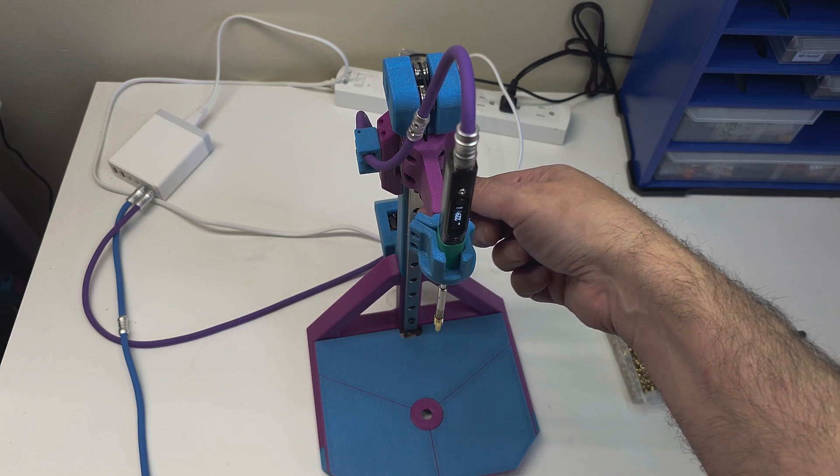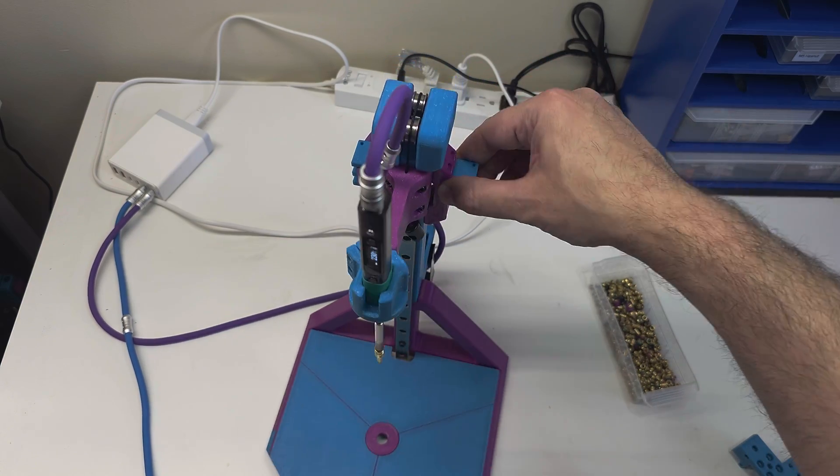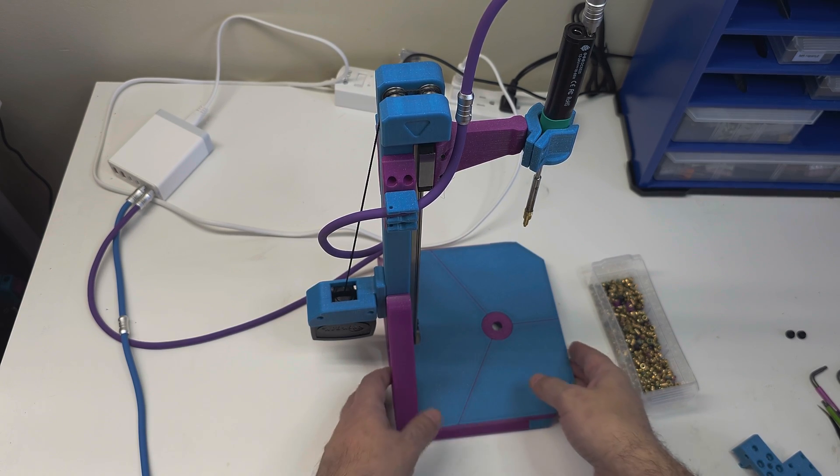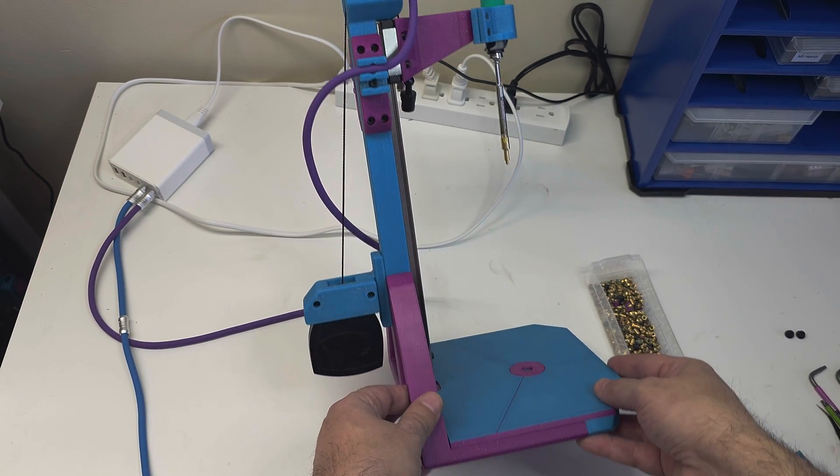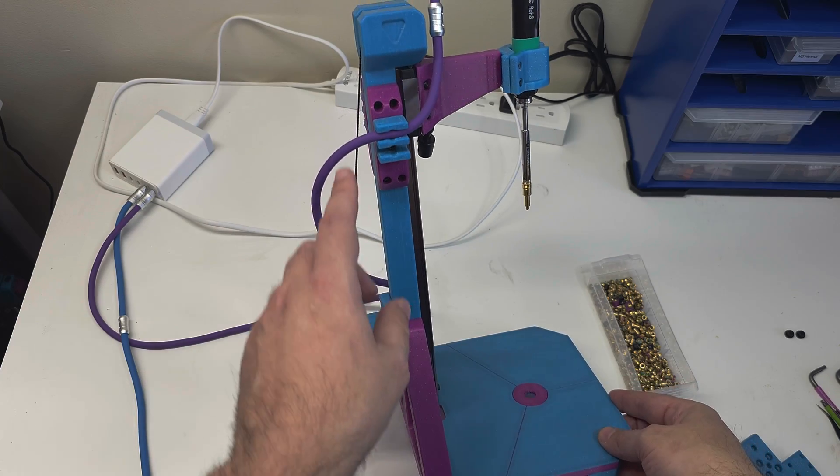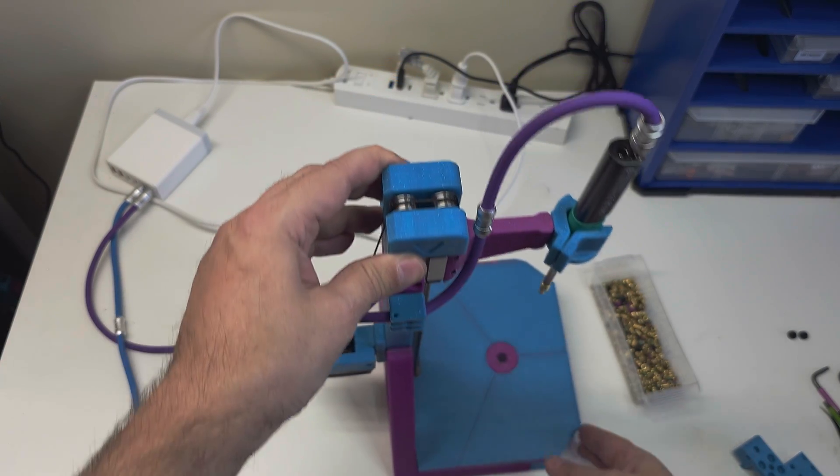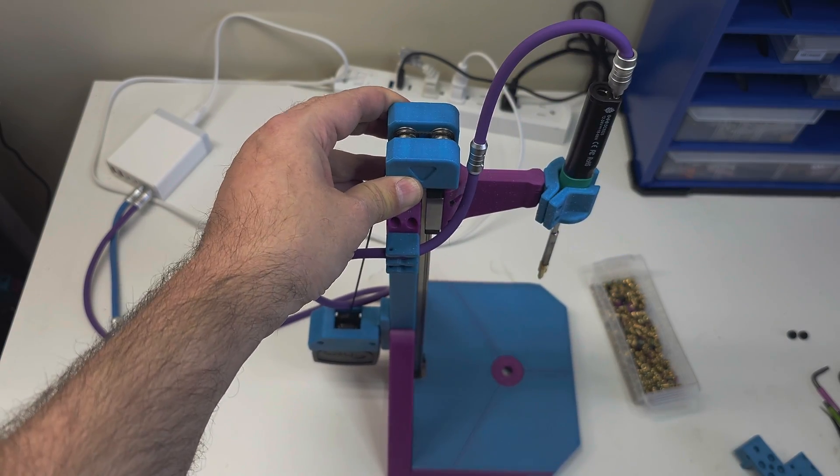Now it retracts automatically using this key-back system which you can see down below here. The key-back wire cable runs up to the top over these two pulleys.